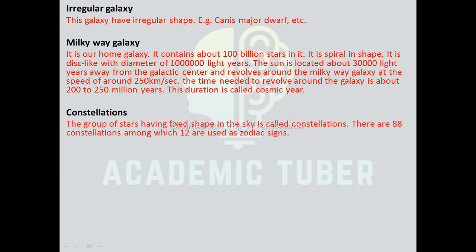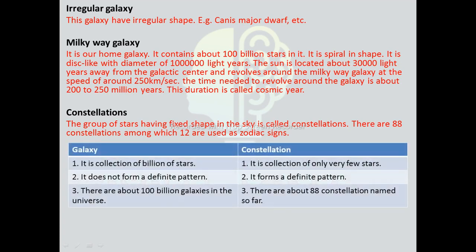Constellations: the group of stars having a fixed shape in the sky is called a constellation. There are 88 constellations, among which 12 are used as zodiac signs. Difference between galaxy and constellation: a galaxy is a collection of billions of stars, whereas a constellation is a collection of only a few stars. A galaxy does not form a definite pattern, whereas constellations form a definite pattern. There are about 100 billion galaxies in the universe, whereas there are about 88 constellations.